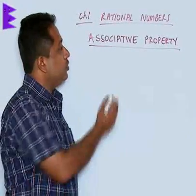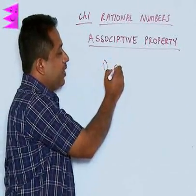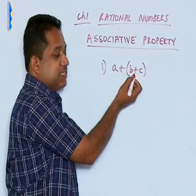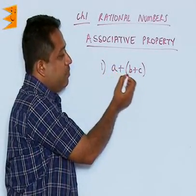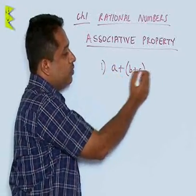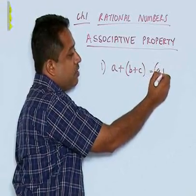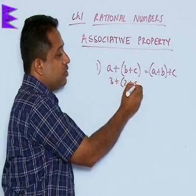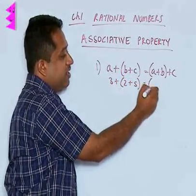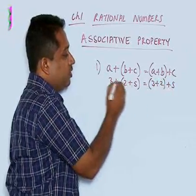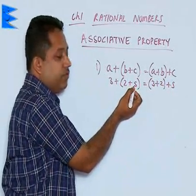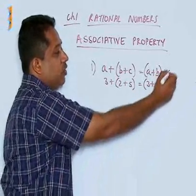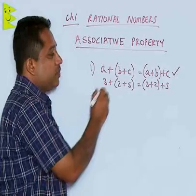It is not true for subtraction or division. Next is the associative property. Let us check whether the associative property is true in case of addition. Does the order of the brackets matter when we are adding? Is (A plus B) plus C the same as A plus (B plus C)? The answer is yes, because when we add numbers, the order does not matter. So, 3 plus 2 plus 5 will be the same as 3 plus 2 plus 5: adding 2 and 5 gives 7, and 7 plus 3 gives 10; alternatively, 3 plus 2 is 5, and 5 plus 5 also gives 10. In case of addition, the associative property is true.